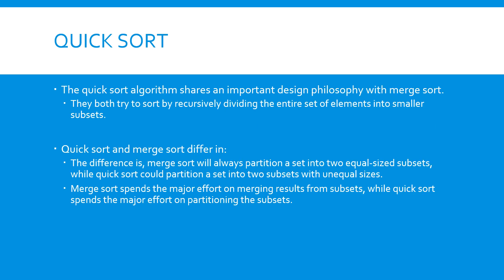In its high-level design, quicksort is similar to mergesort, in that both try to sort the elements by dividing them into smaller subsets. However, there are two major differences. First, while the mergesort algorithm partitions the input list into two equal-size subsets, quicksort does not impose any constraints on the sizes of the subsets. Second, in each sorting phase, mergesort spends its major effort on combining two smaller sorted lists into one, but quicksort spends its major effort on finding the proper location for a selected element.